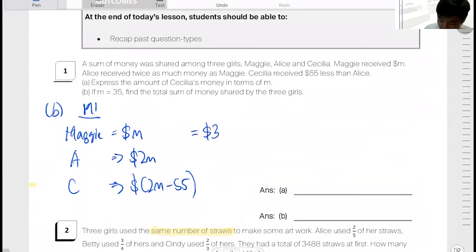So M would be $35, $2M would be $70, and Cecilia would be $15. Is that what you did? Okay, then there must be a calculation mistake, right?